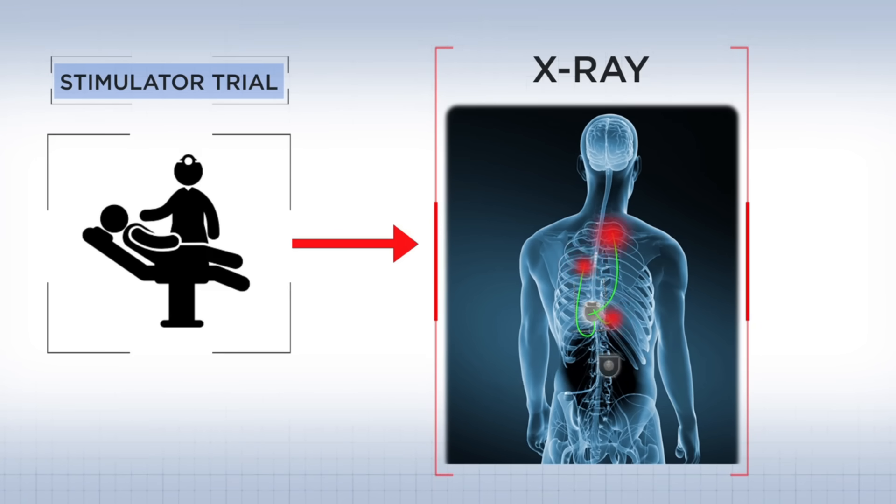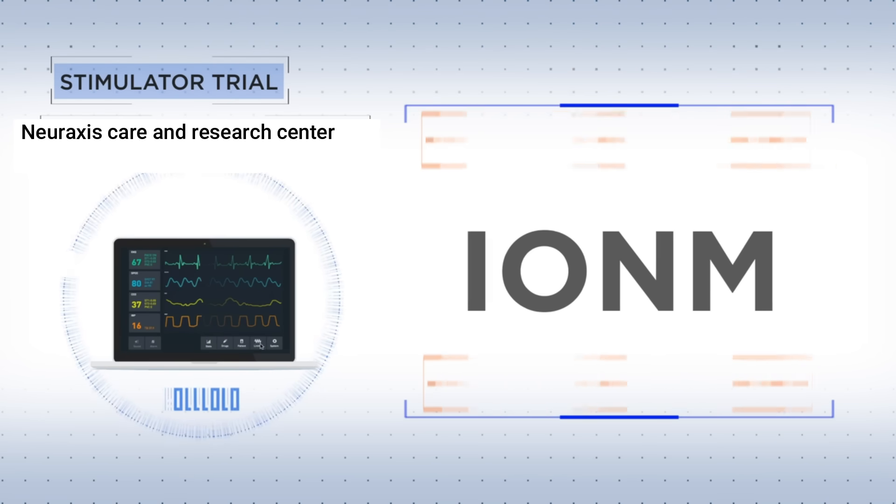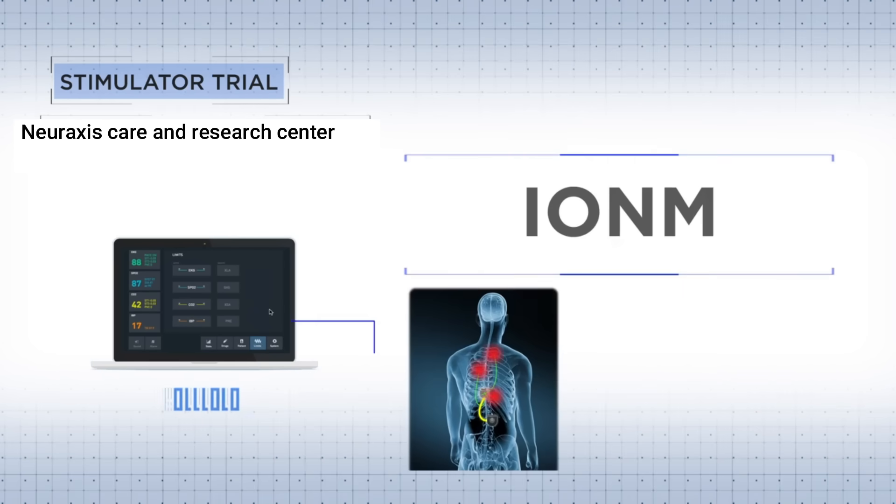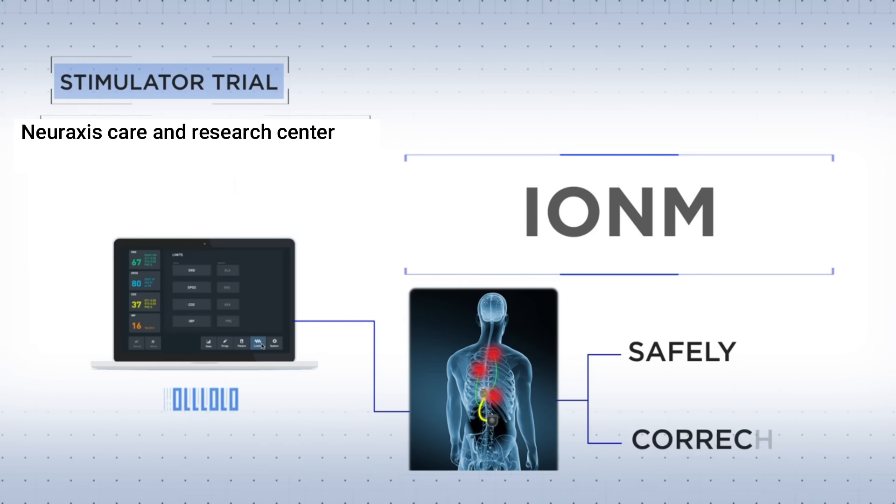A pulse generator is placed under the skin in the lower back. An extension wire connects the two. For even greater precautions, a device called an IONM, monitored by a highly trained technician, constantly monitors your nervous system during the procedure, making sure the implant is done safely and correctly.